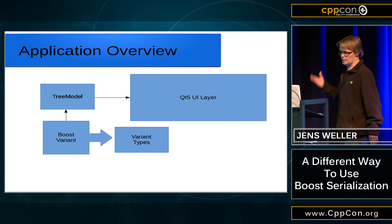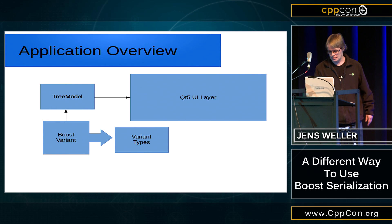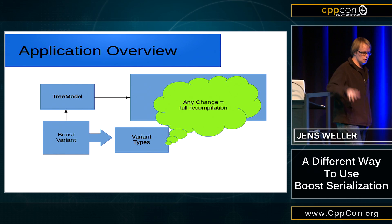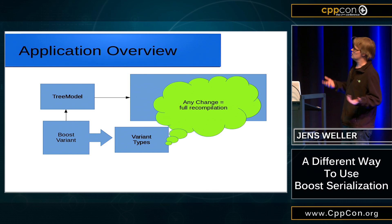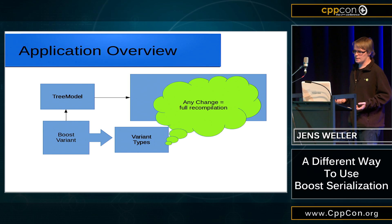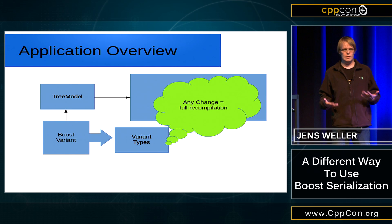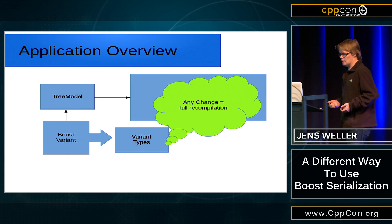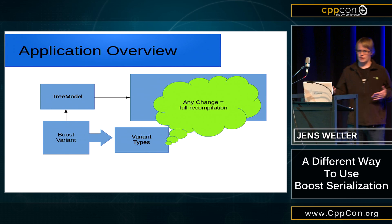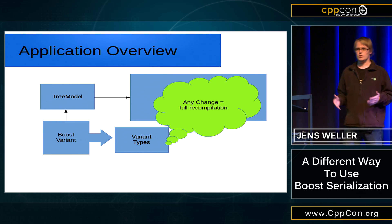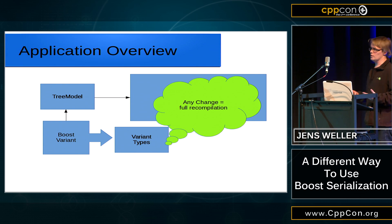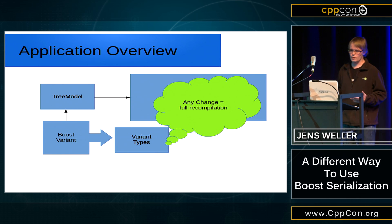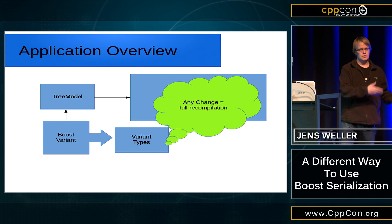When I do that, the first thing that happens is that each change to those variant types or to those data types which are to be serialized will force me to recompile my application, which kind of sucks. I also use things like boost signals 2, which links like forever. So I want to avoid having to recompile the UI code when I actually write serialization code.